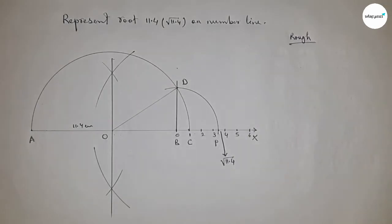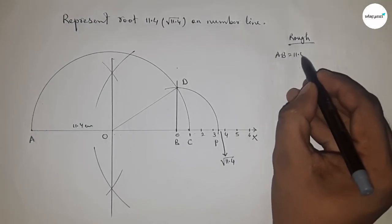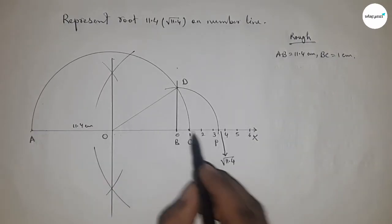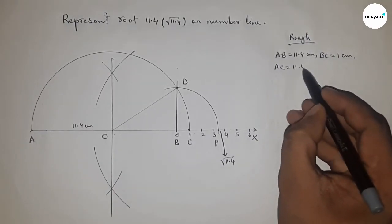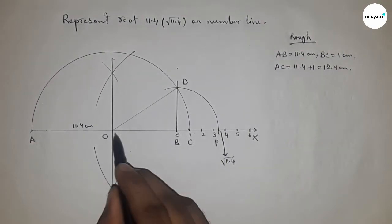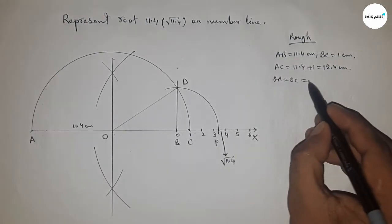Given: AB = 11.4 cm, BC = 1 cm. So we can write AC = 11.4 + 1 = 12.4 centimeter.